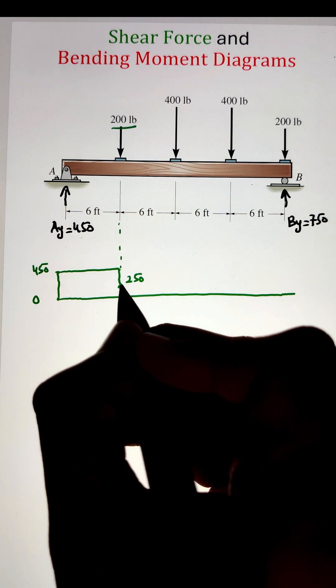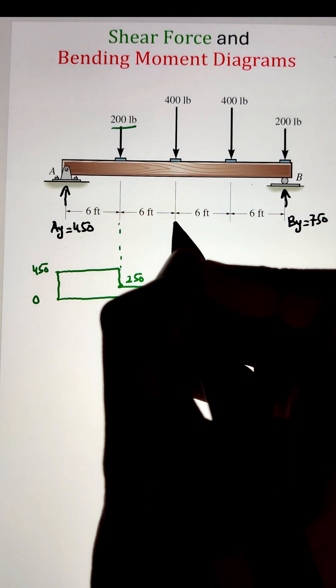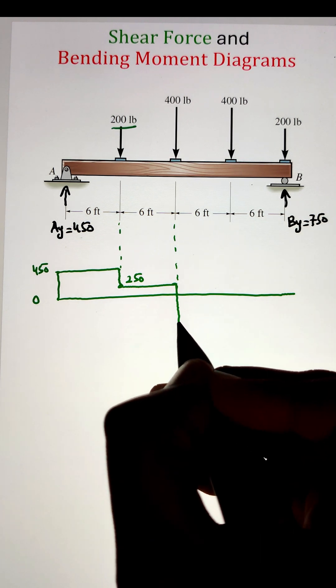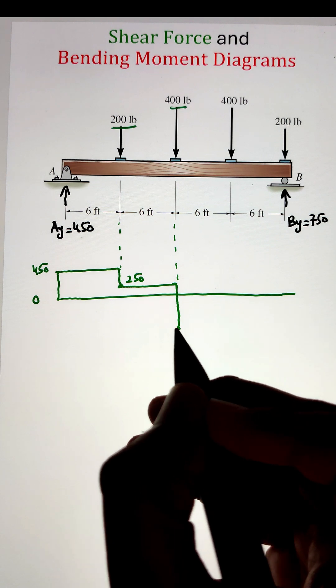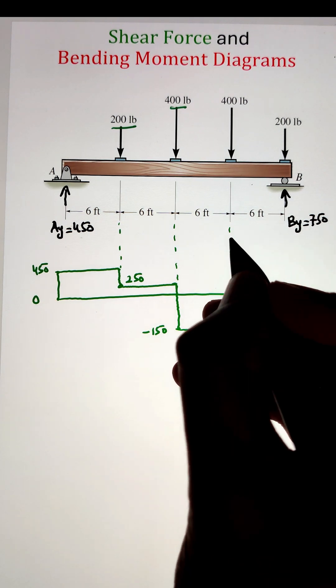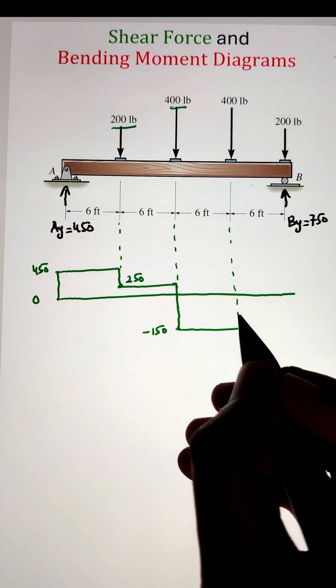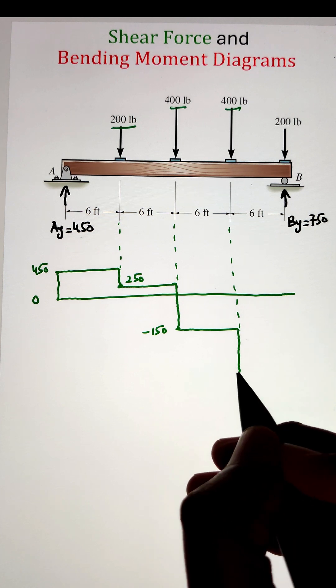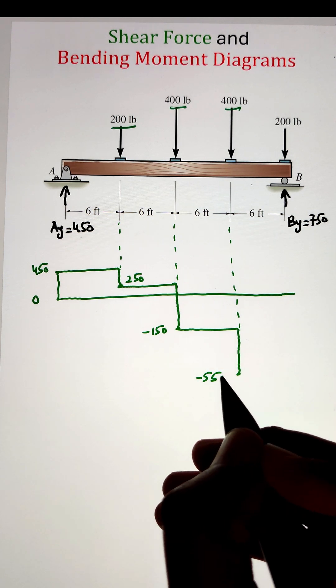Next, the load is of 200 pounds that is acting in the downward direction. That will cause the jump down from 450 to 250. Similarly, there is a jump down of 400 at 12 feet from point A and again a jump down of 400 pounds that is at 18 feet from point A. That will cause our shear force diagram to go to negative 550.